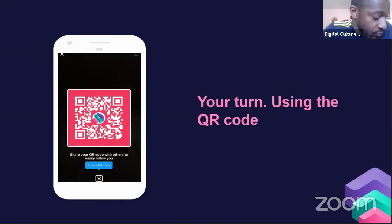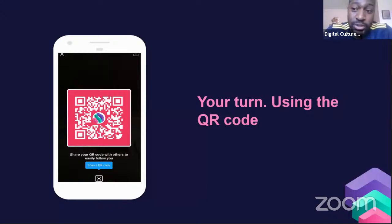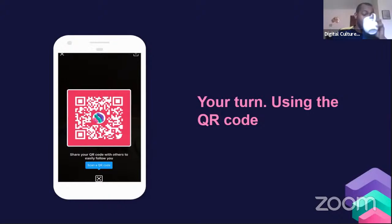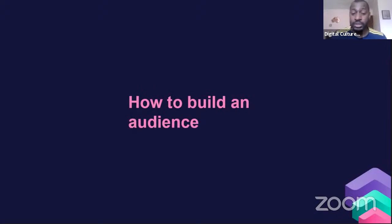It's your turn — here's a chance to test out the QR code. Go to your camera, hold it up to the screen, and it should give you a sign to go to the Twitter page. Give us a follow if you're not already following. QR codes can be added anywhere people have access to you — websites, other social media platforms, flyers, etc. Next, we'll talk about building audiences.